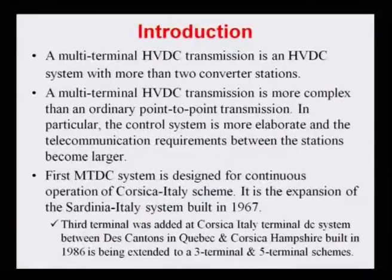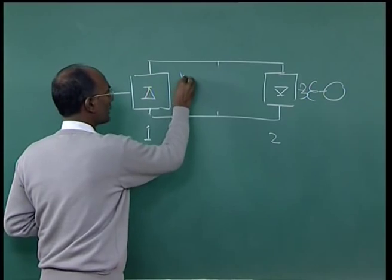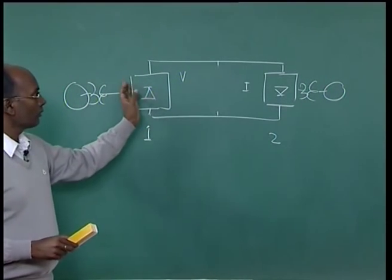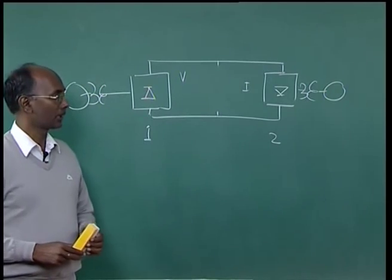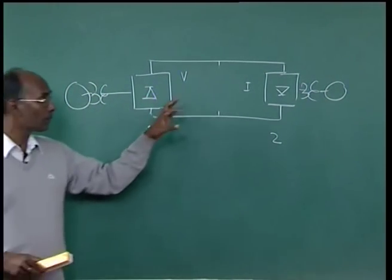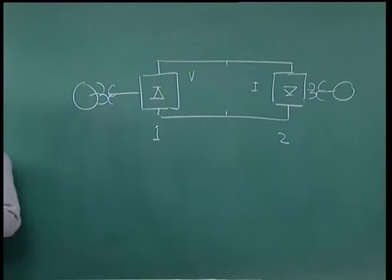The multi-terminal HVDC transmission system is more complex than the ordinary point-to-point or two-terminal HVDC system. In particular, the control system is more elaborate and the telecommunication requirements between stations become larger. In a two-terminal system, one terminal controls voltage and the other controls current, requiring a communication channel. With more terminals, we need more and more telecommunication between all converter stations.